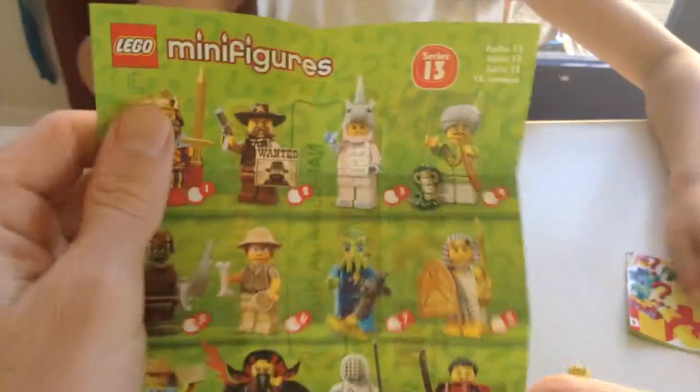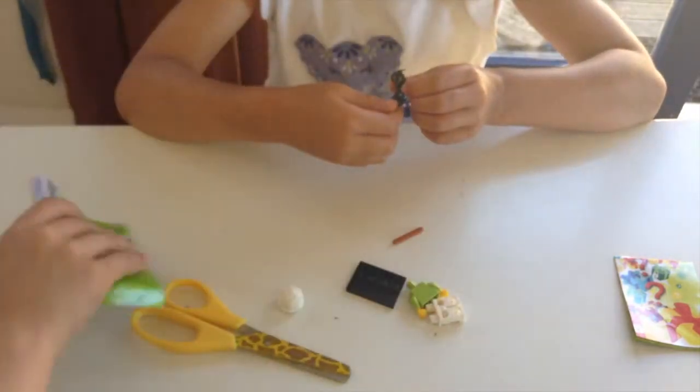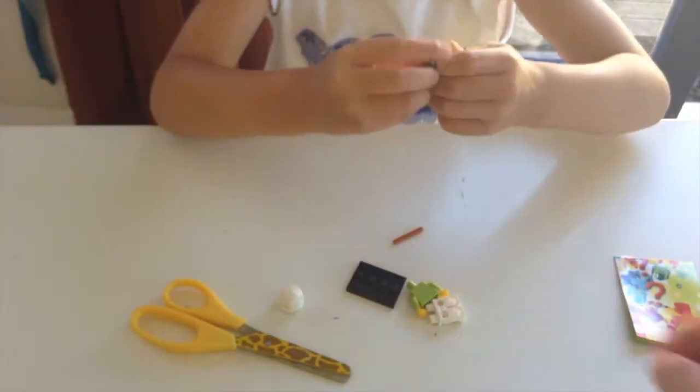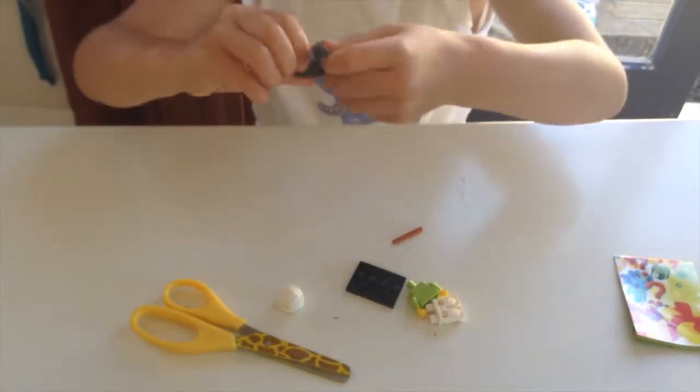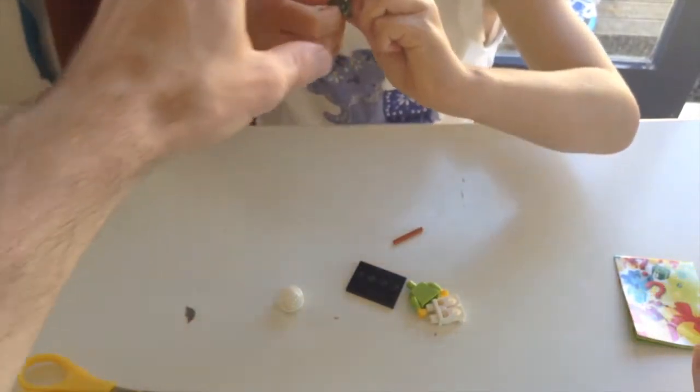So let me just open the snake charmer, number four. That's a really cool one because it's got a helmet. Yeah, it's got a snake. Can you show me the snake? Snake's wobbly. Is it? Can I see?